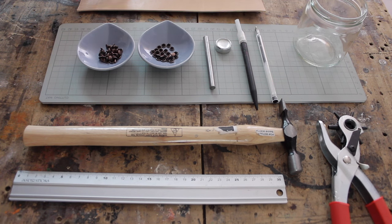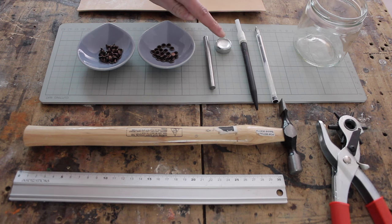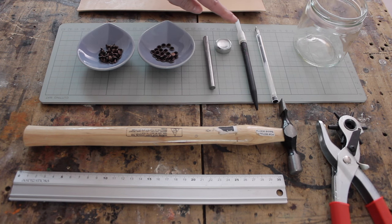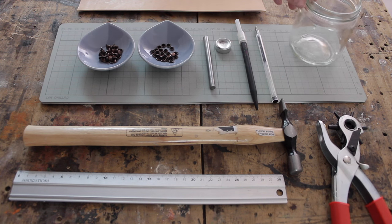We're gonna need a piece of leather, rivets, rivet anvil and a setting tool, craft knife, panel pencil, a jar, hammer, ruler, and a hole punch.